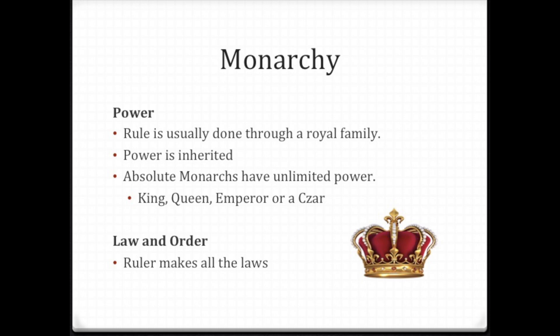Most monarchs believed that they were direct descendants of God, and therefore their lineage came directly from God, which is why their subjects rarely ever questioned what they were told. The law and order in a monarchy meant the king or queen made all the laws, and those subjects had to follow those laws.